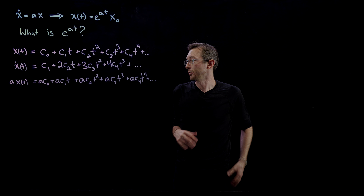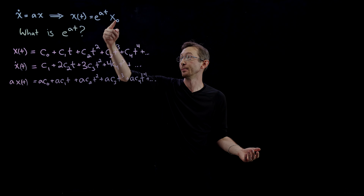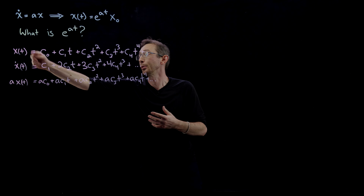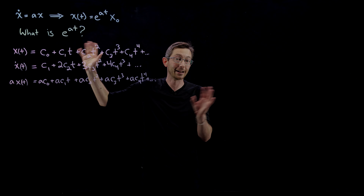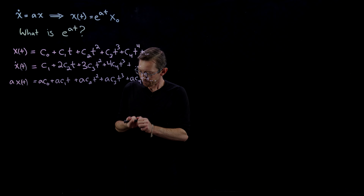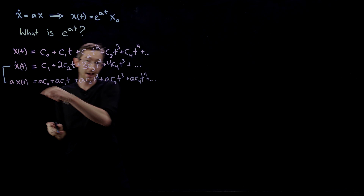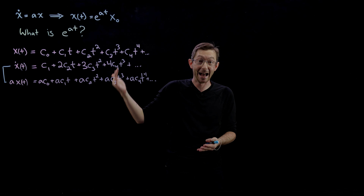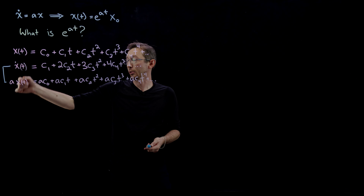There is a whole lecture on what a Taylor series is — this infinite polynomial expansion of x(t) — and how to plot it in MATLAB and Python. You can click on that if you need a refresher. Now we're going to take the expression for x_dot and the expression for a*x and set them equal to each other, because our differential equation is essentially a rule saying x_dot has to equal a times x at every instant in time.